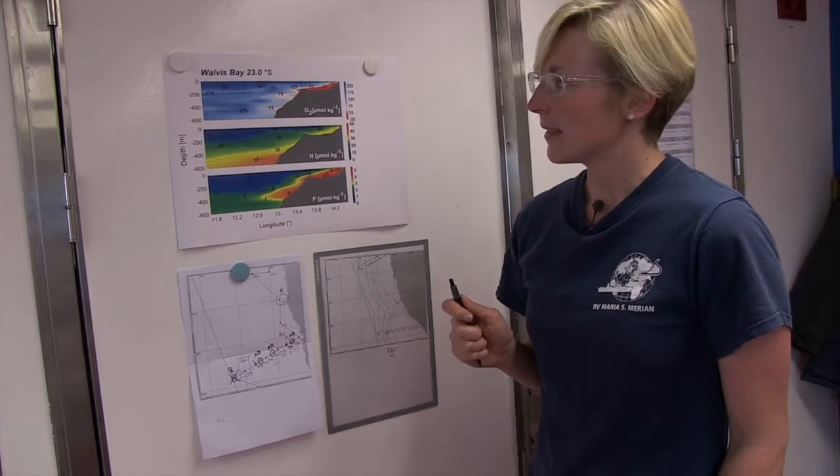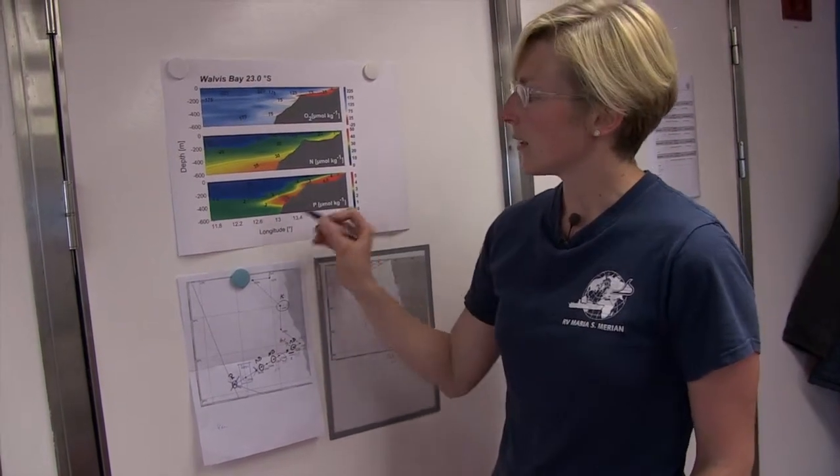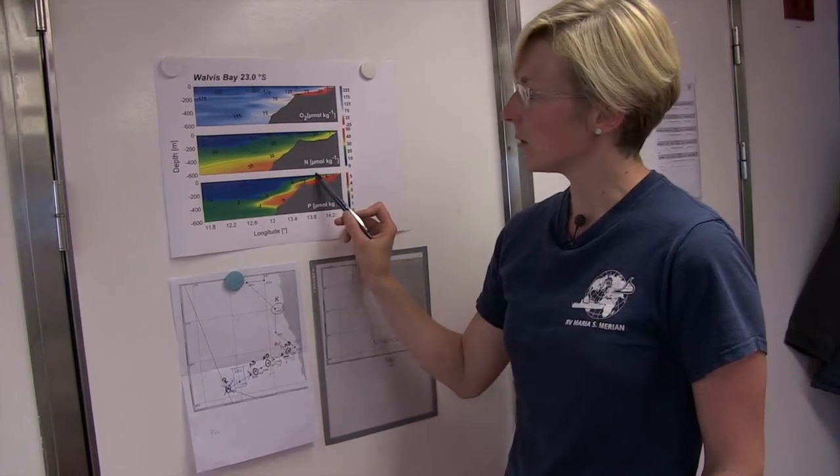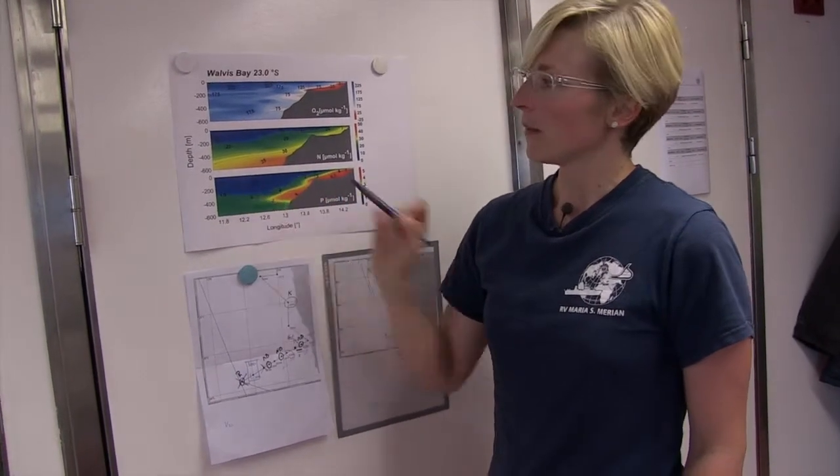The result is that the ratio of the two nutrients changes significantly. This variant nutrient ratio is then brought to the surface during the upwelling and transported into the open ocean and to the South Atlantic, with repercussions for the nutrient balance in the South Atlantic.